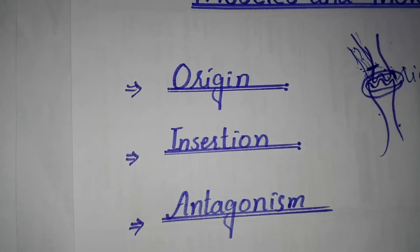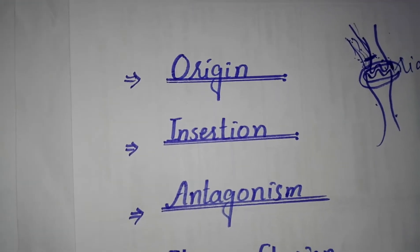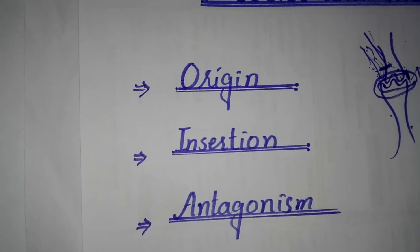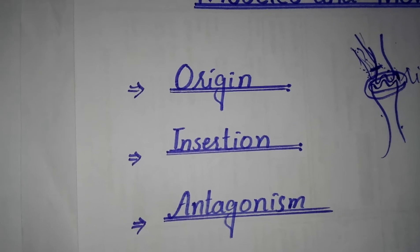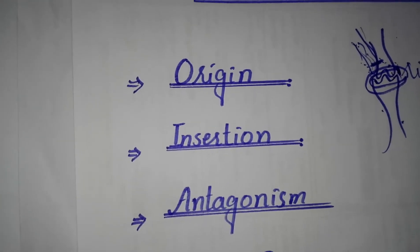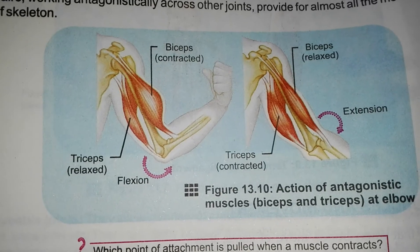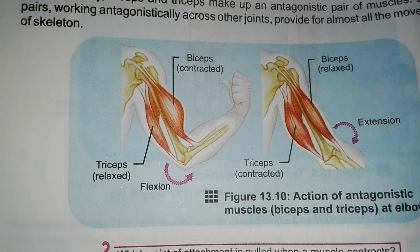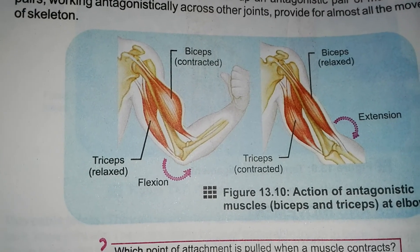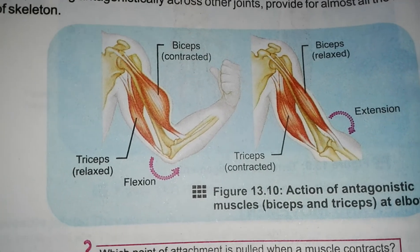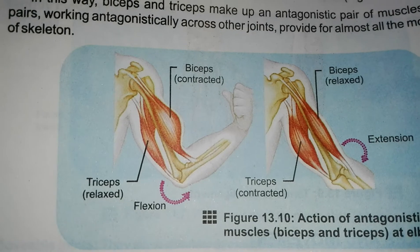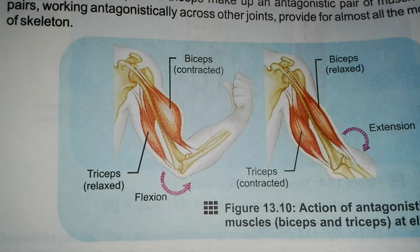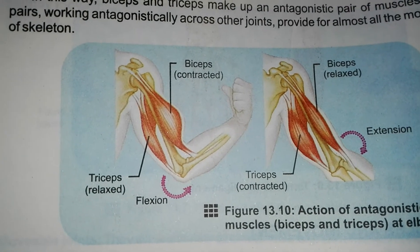We will discuss the role of skeletal muscles. The first point is origin. We will look at the diagram on page 64. One end of the skeletal muscle is always attached to an immovable bone.